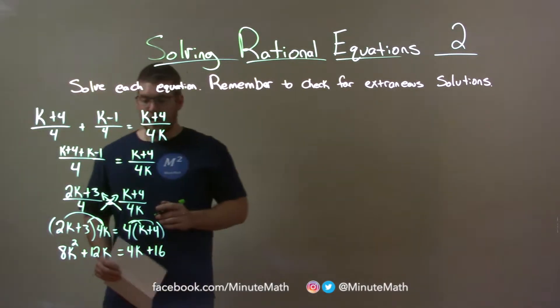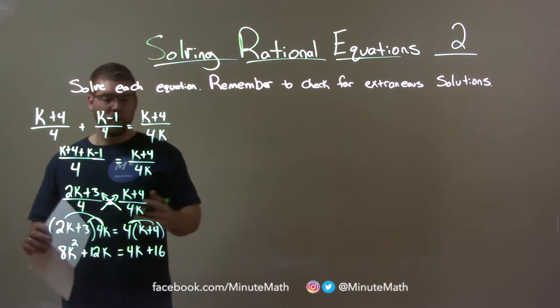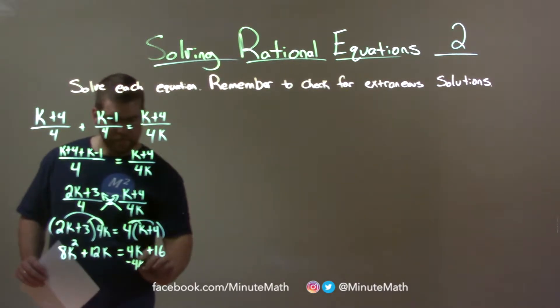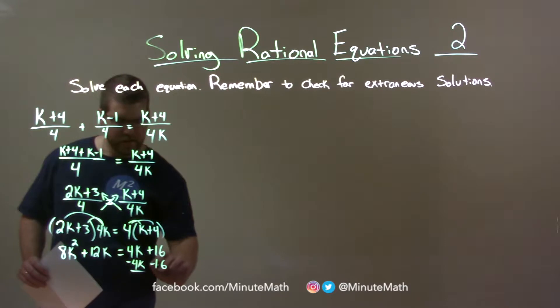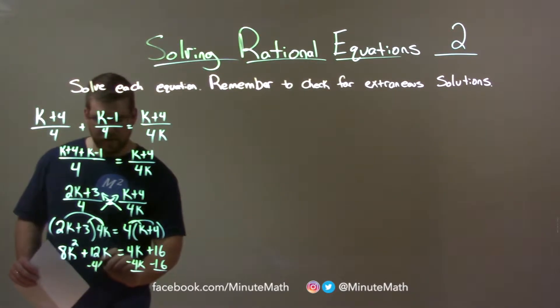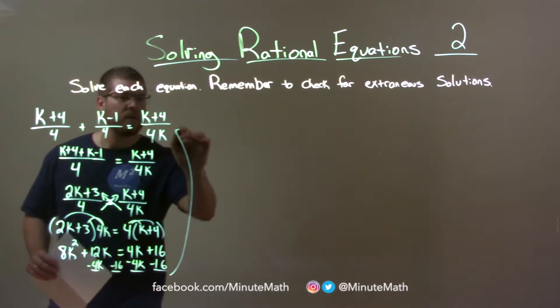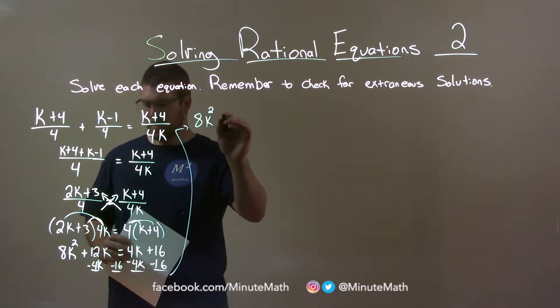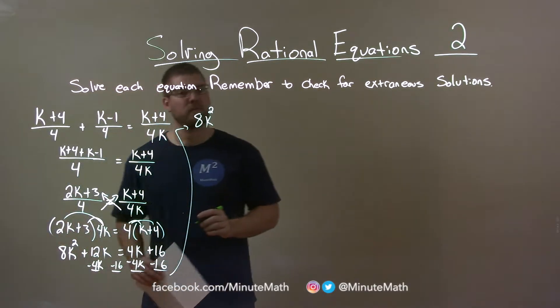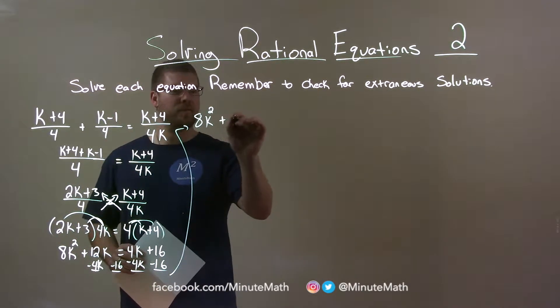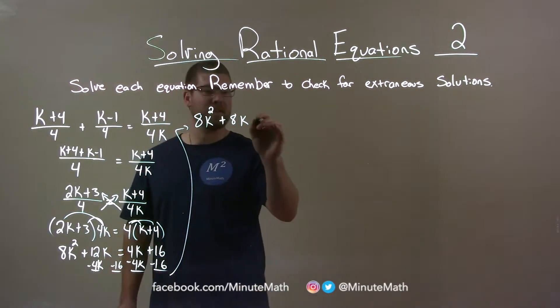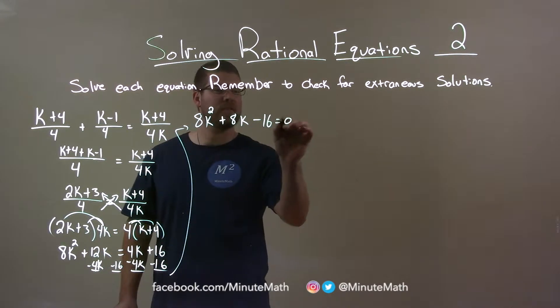Now let's bring everything over to one side. So bring everything over and subtract a 4k and subtract a 16. Continue the work up here and we're left with 8k squared. And then 12k minus 4k is plus 8k. And then we have a minus 16 left over, minus 16 and that's equal to 0.